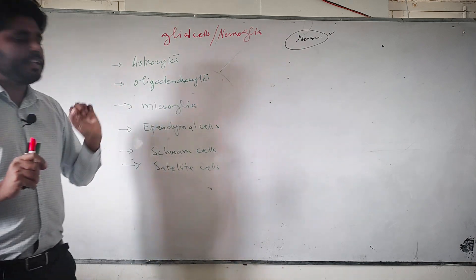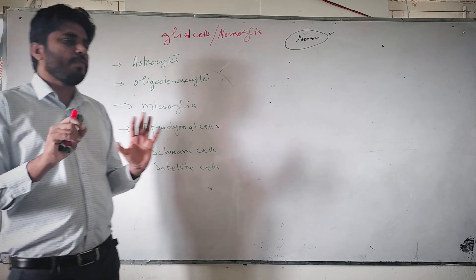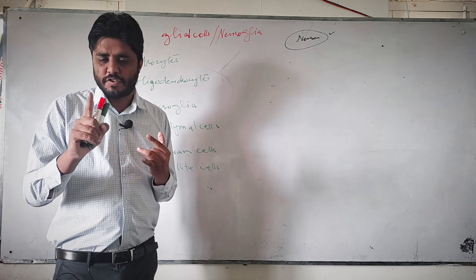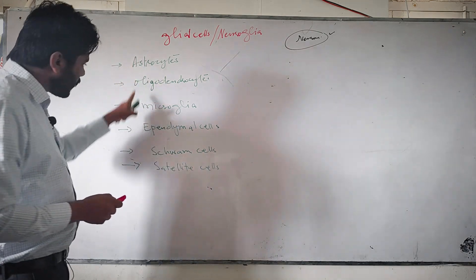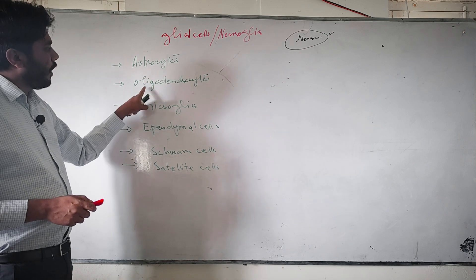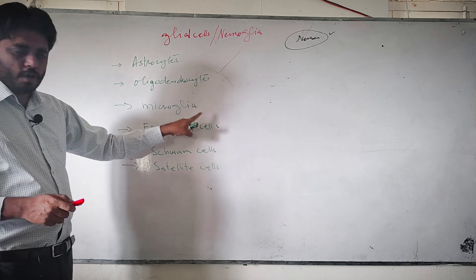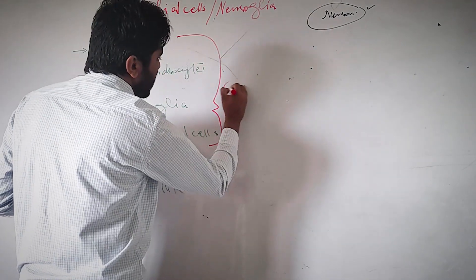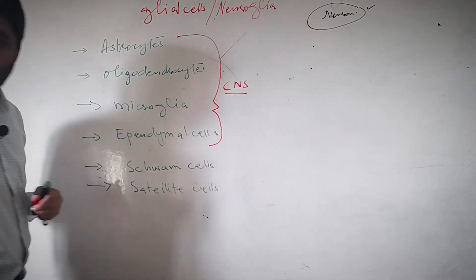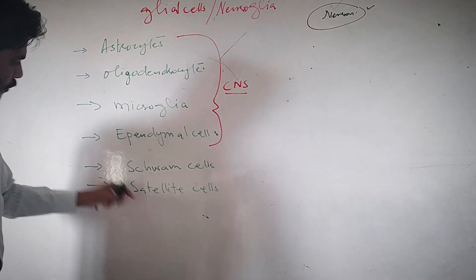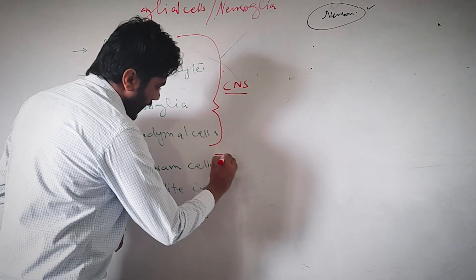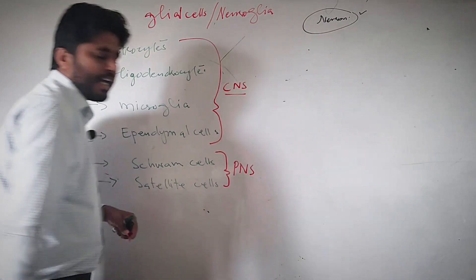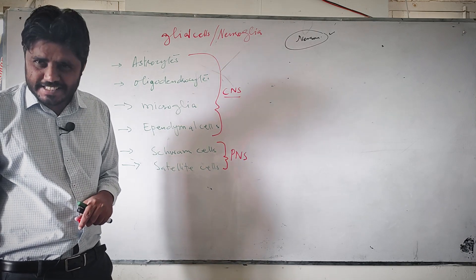Your nervous system is divided into two major parts: the central nervous system and the peripheral nervous system. The four cells — astrocytes, oligodendrocytes, microglia, and ependymal cells — are located in the CNS, the central nervous system. The two cells — Schwann cells and satellite cells — are located in the PNS, the peripheral nervous system.